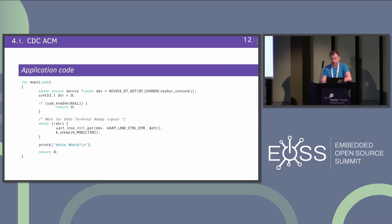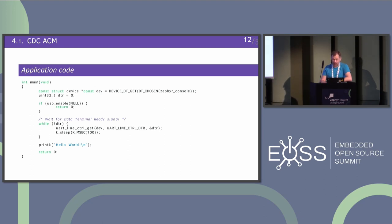One thing that your application can do is: after you enable USB, before you start using this virtual UART controller, you can wait for a DTR ready signal. That's the only way to determine if an application on the host side has started communication — whether it has opened the port or the interface. There is no other way. Our UART API doesn't provide a notification other than polling. What you can do is just poll for this data-ready signal.